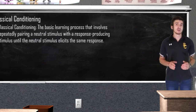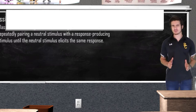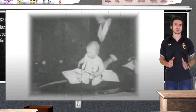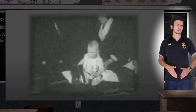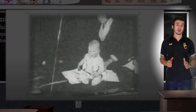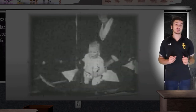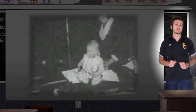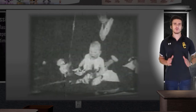Pavlov proved that a neutral stimulus could be used to produce a conditioned response in animals, but can this be done in humans? In February of 1920, a rather unethical research study was conducted by John B. Watson and his assistant Rosalie Rayner at Johns Hopkins University. Watson wanted to see if Pavlov's theory of conditioning could be applied to humans to evoke a fear response.